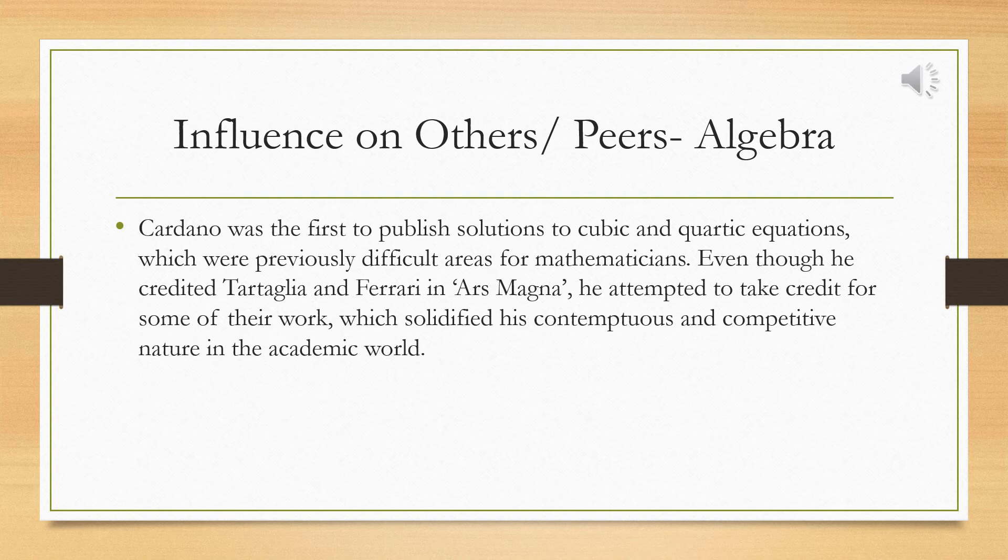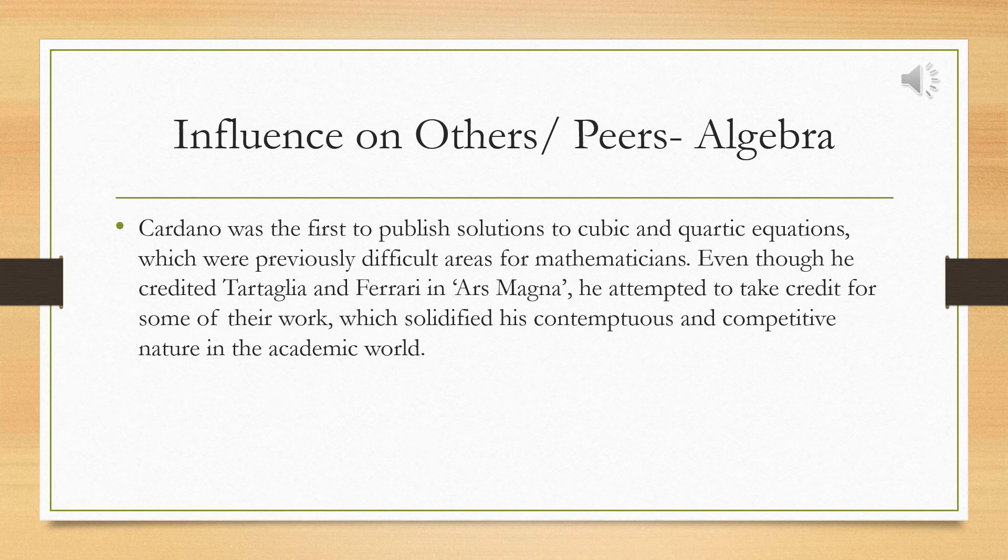Cardano's work on cubic equations formed the groundwork for solutions to quartic equations, formulated by his son-in-law and apprentice, Ferrari. However, this solution was also being worked on by another Italian mathematician, Niccolò Fontana Tartaglia. Cardano decided to credit him in his publishing, Ars Magna, for the cubic equation, however took full credit for the quartic equation that Tartaglia developed, which in turn blackened Cardano's reputation in the scholarly world.